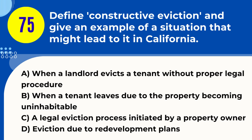Question 75. Define constructive eviction and give an example of a situation that might lead to it in California. A. When a landlord evicts a tenant without proper legal procedure. B. When a tenant leaves due to the property becoming uninhabitable. C. A legal eviction process initiated by a property owner. D. Eviction due to redevelopment plans. Answer: B. Explanation. Constructive eviction occurs when a tenant is forced to leave a rental property because it has become uninhabitable or unsafe, often due to the landlord's neglect or failure to make necessary repairs. An example is if a landlord doesn't address severe water damage, leading to hazardous mold growth making the property unfit for living.